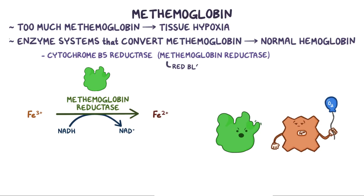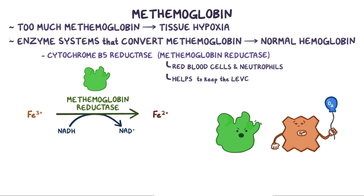This enzyme is found in red blood cells and other cells like neutrophils, and helps to keep the level of methemoglobin in our blood very low, at approximately 1% of total hemoglobin.